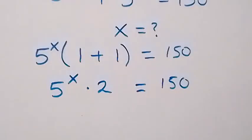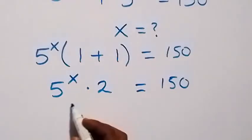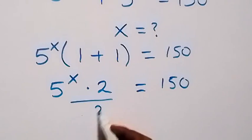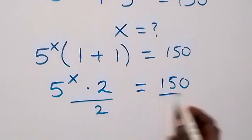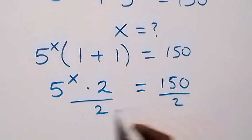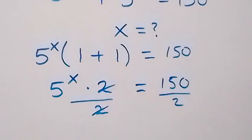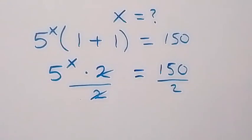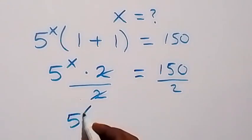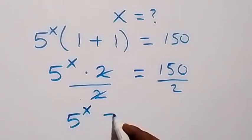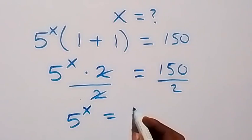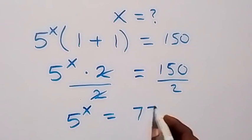Then from here we can divide both sides by 2. We divide this side by 2, also this side by 2. The 2s cancel out and we are left with 5 raised to power x equals to 75 on this side.